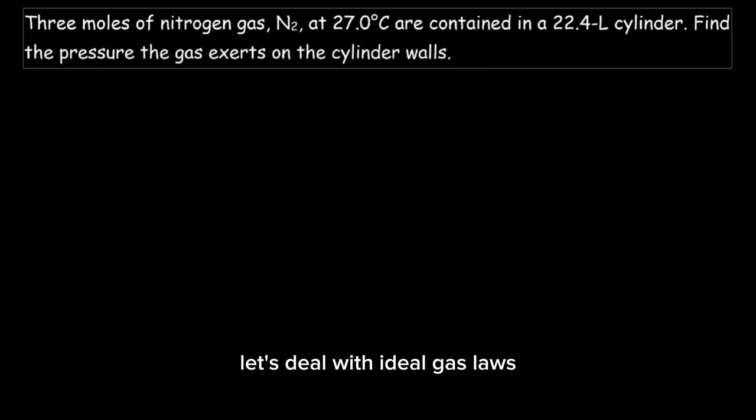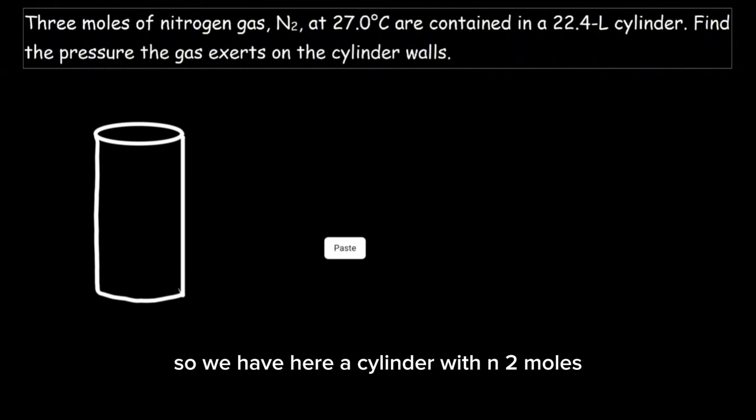Let's deal with ideal gas laws. Three moles of nitrogen gas N2 at 27 degrees Celsius are contained in a 22.4 liter cylinder. Find the pressure the gas exerts on the cylinder walls. So we have here a cylinder with N2.